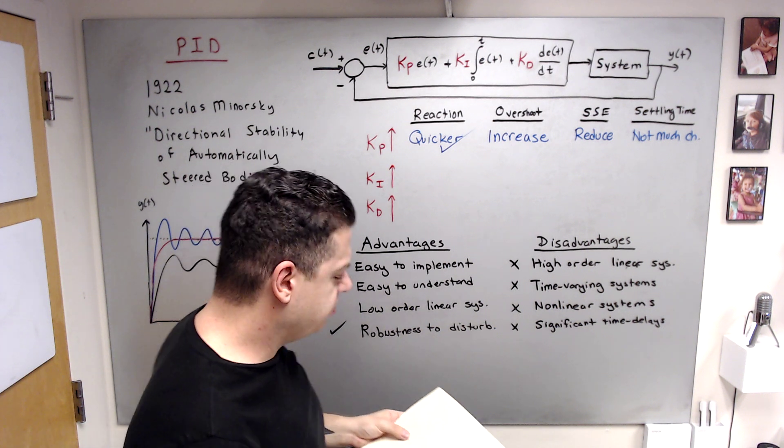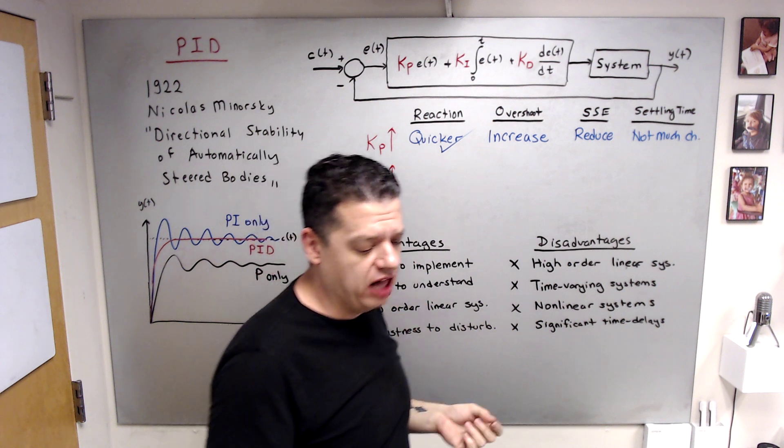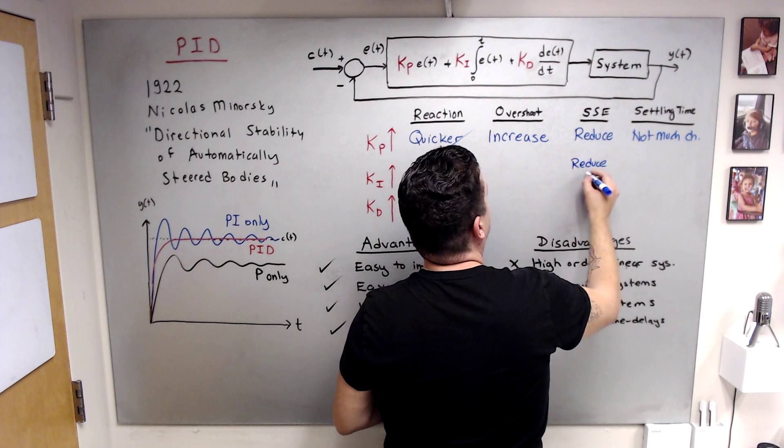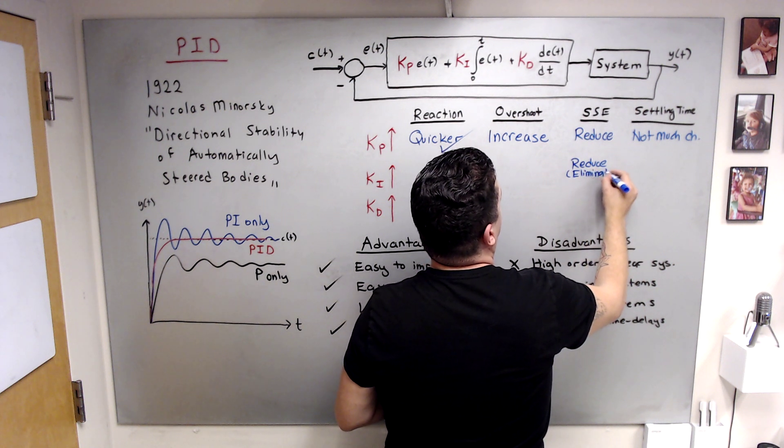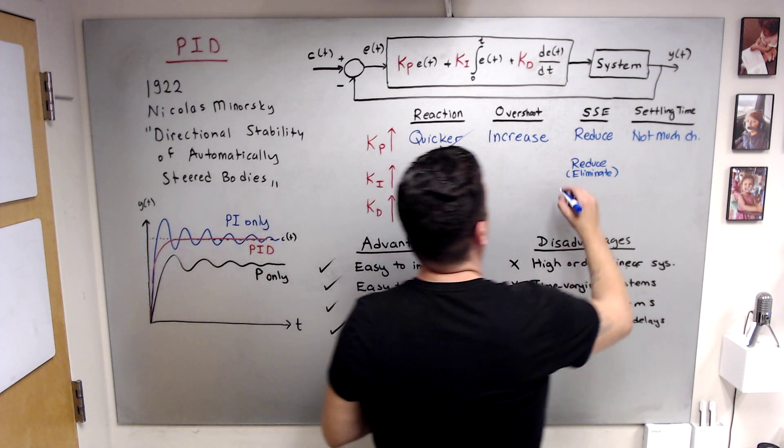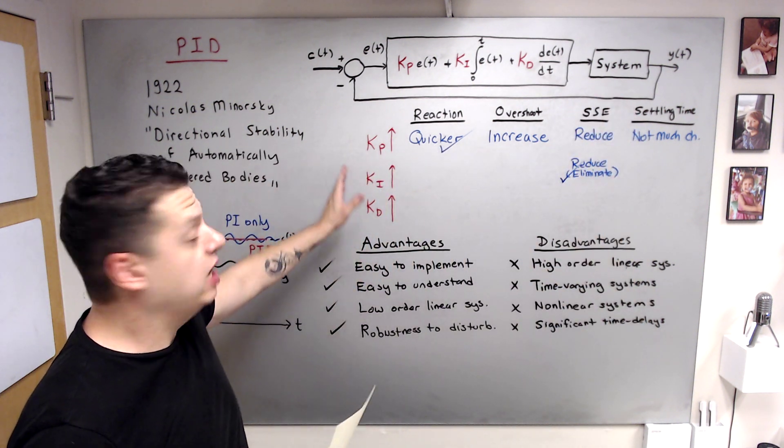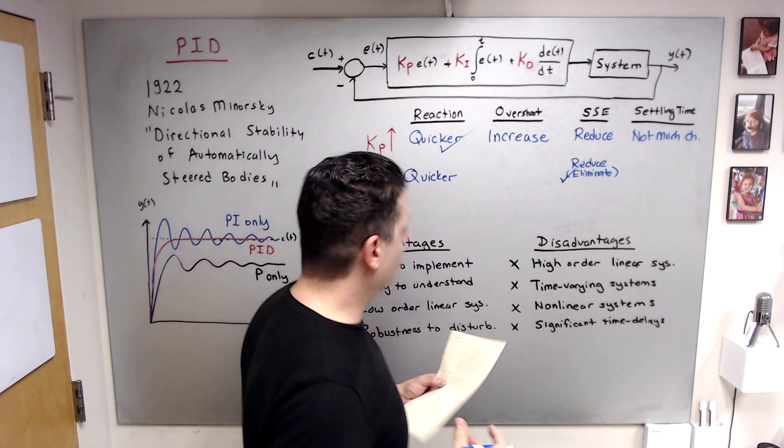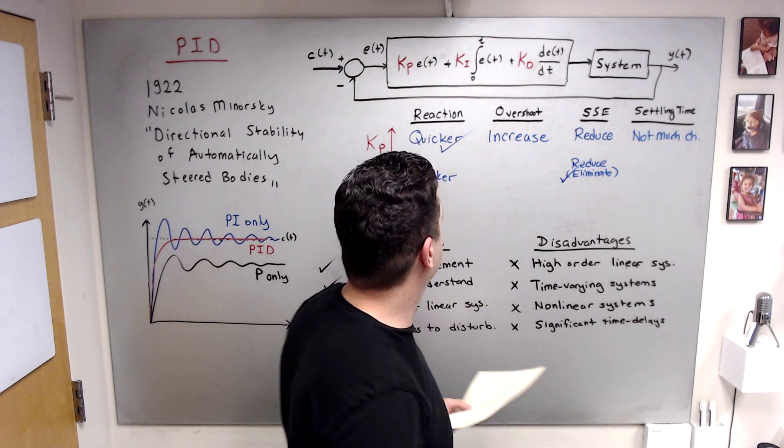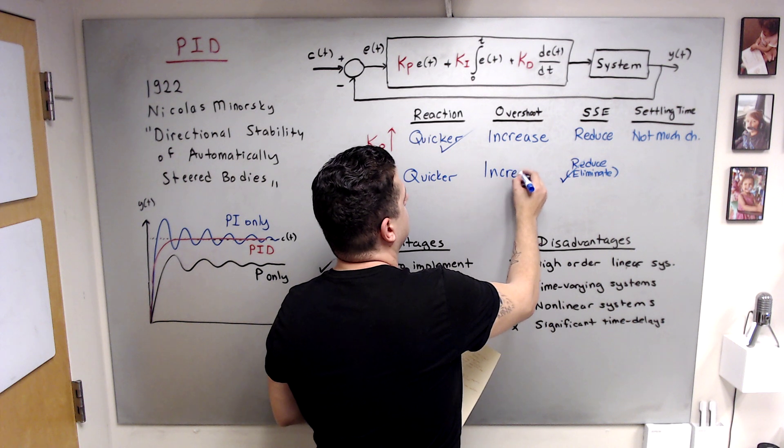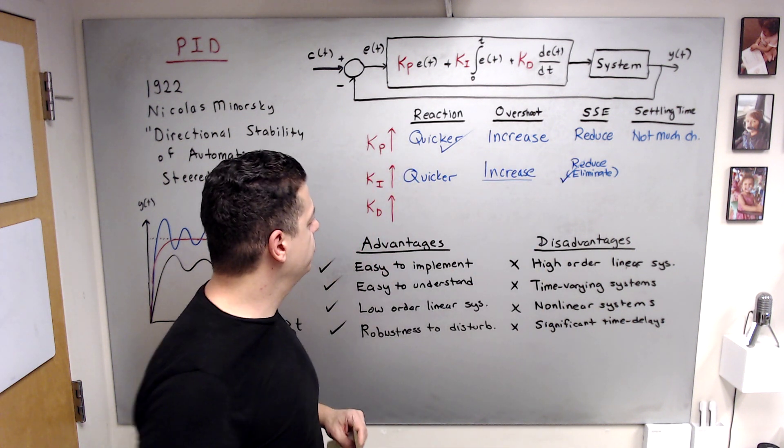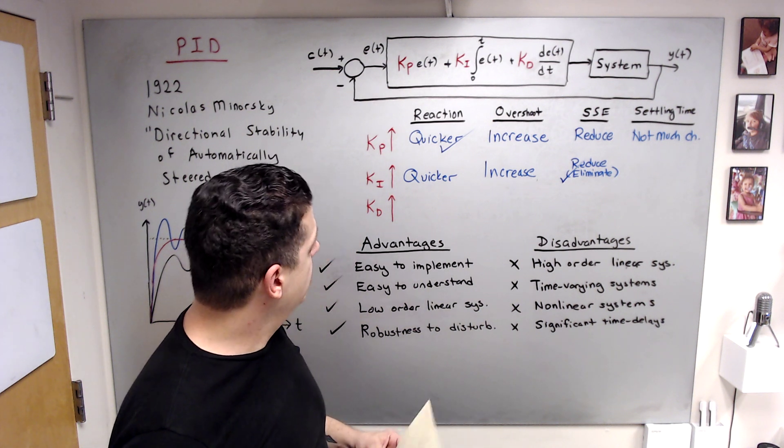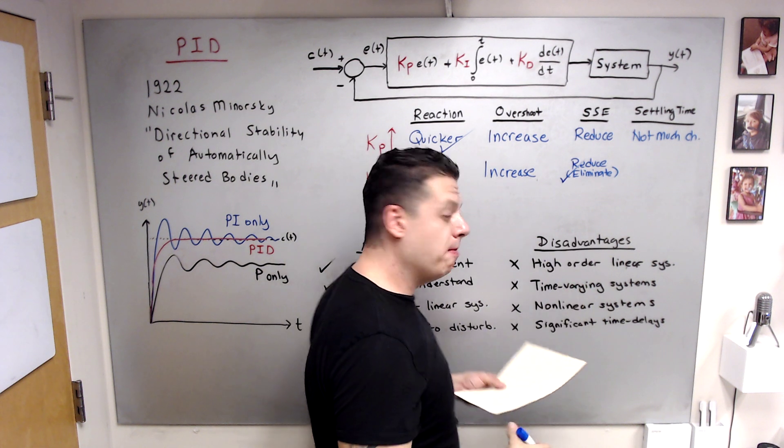Then Ki, since it integrates the error, this helps to reduce or eliminate the steady state error. That's the main purpose of the Ki term. Now system will react more quickly. And because of the nature of the integral, you may see more oscillations and more overshoot. So it increases. Once again, I am not very worried about increase. We are going to eliminate those oscillations by introducing the Kd term. So it is not an issue. And settling time, since it increases oscillations and overshoot, settling time may increase as well.